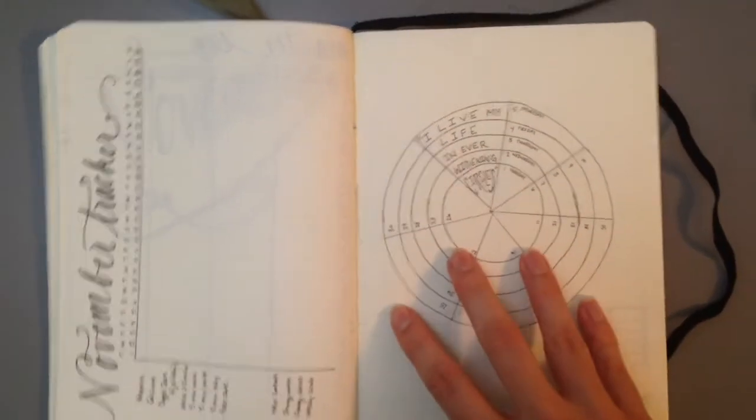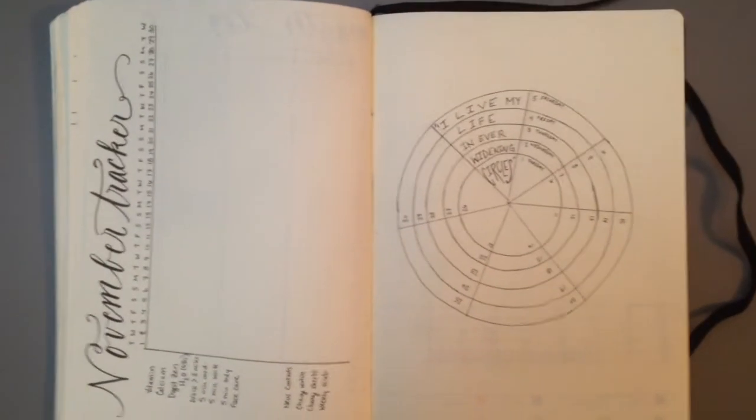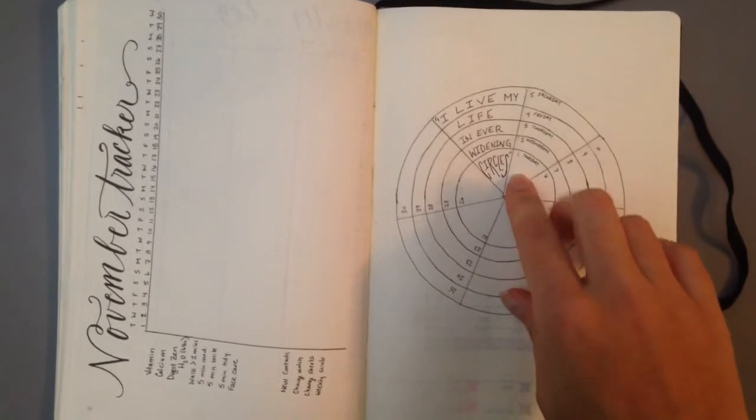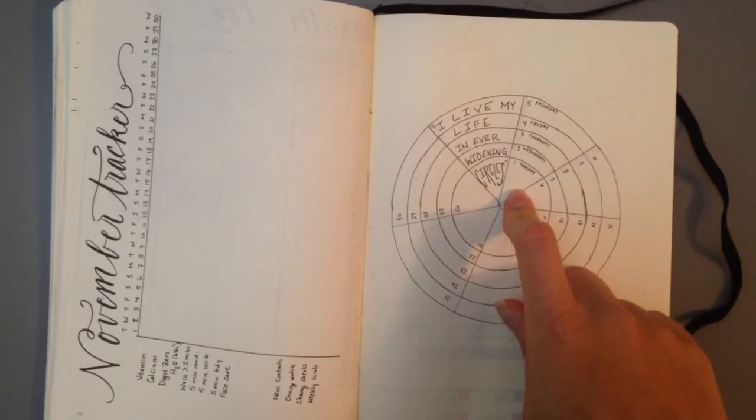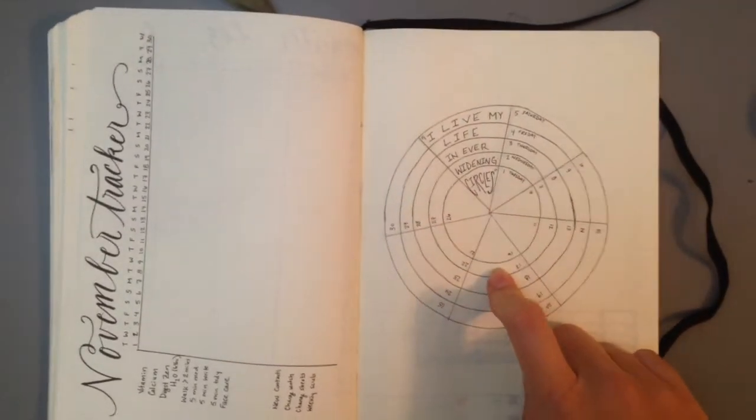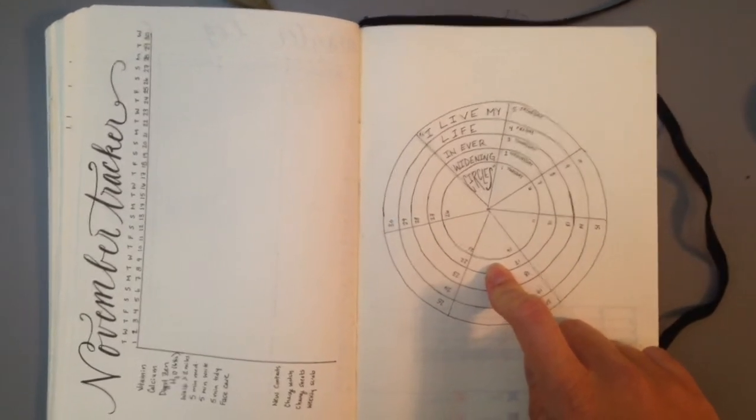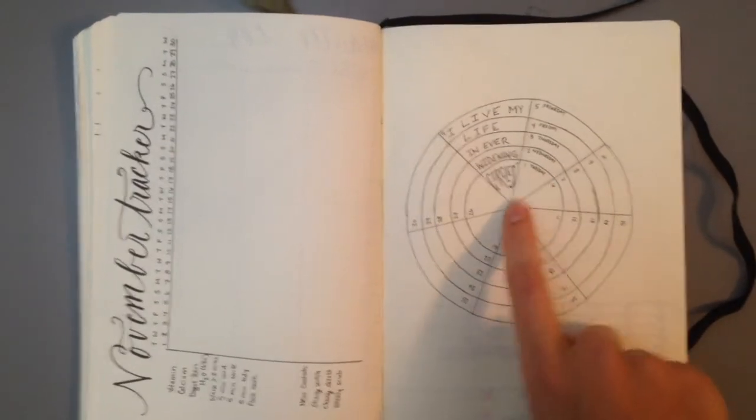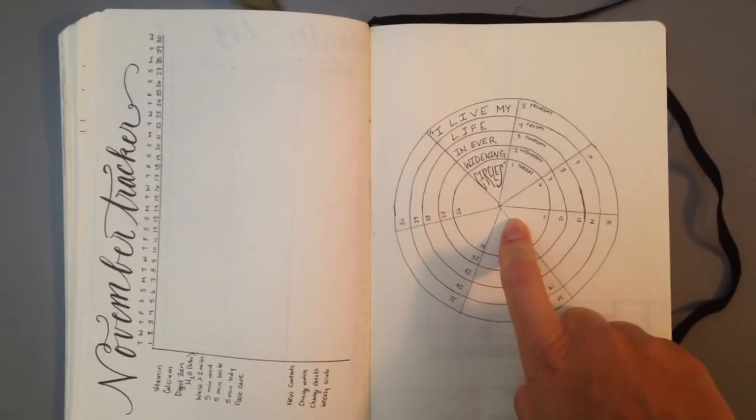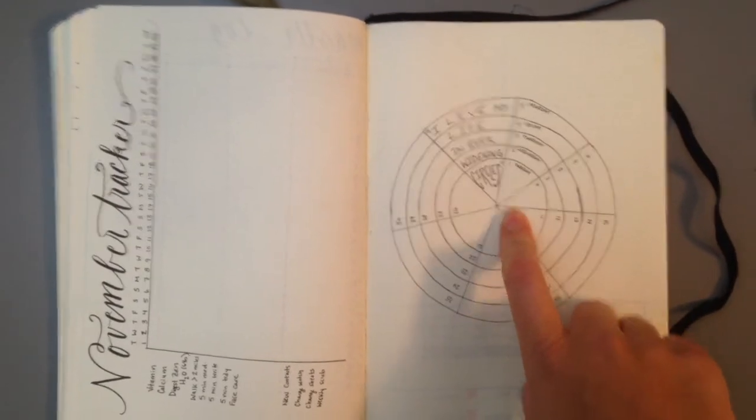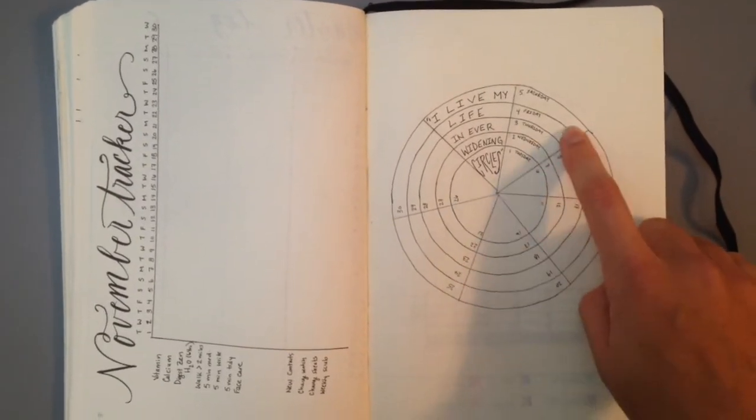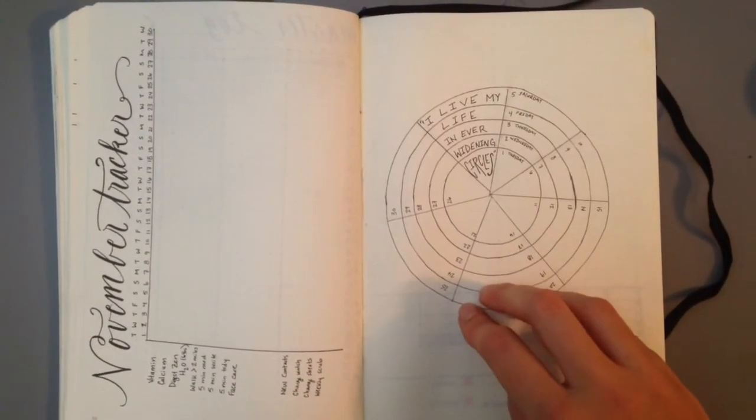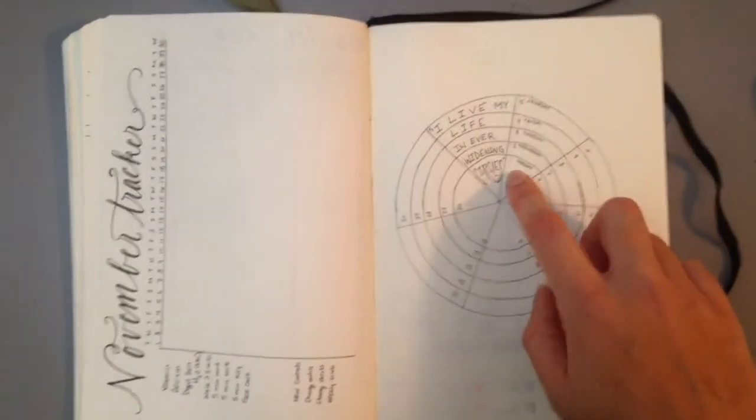I was going to try a new gratitude tracker based on a line from Rainer Maria Rilke that says, I live my life in ever-widening circles. But I actually messed up setting this up. I divided it into seven sections so that each circle could be a week. But I started numbering from the inside out, so it doesn't actually lay out the way I had intended for it to. But that's okay, I still have room to write in.